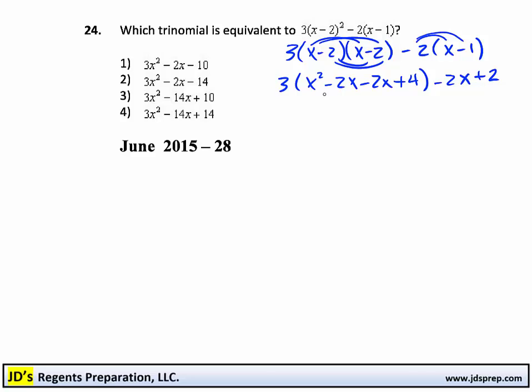At this point, we can combine some like terms inside of the big set of parentheses. So this becomes 3 times x squared minus 4x plus 4, and then following that is minus 2x plus 2.